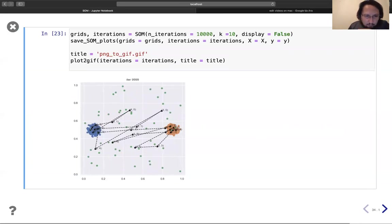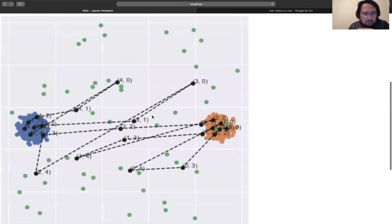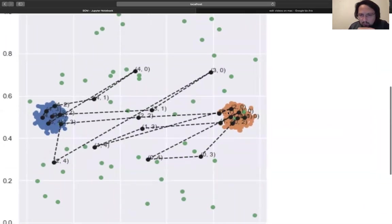At the end you see many neurons are here and many neurons are here and some of the neurons are in between. So if we look at here, can we see? So this is two zero, two one, one zero, zero two. So they are here.